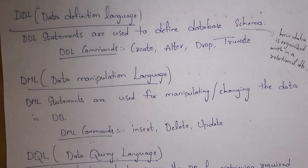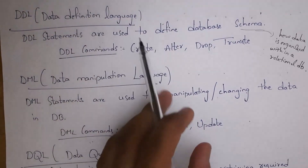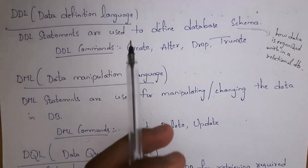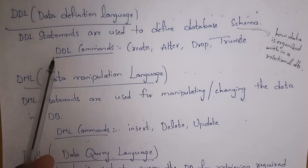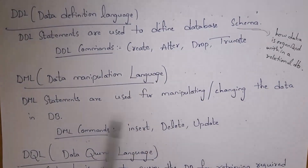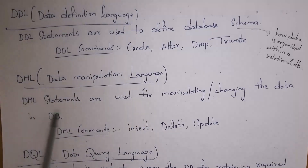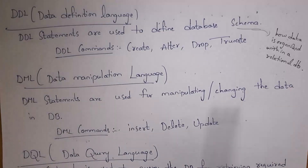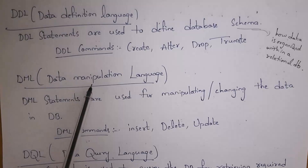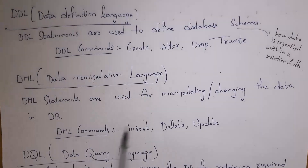DDL stands for Data Definition Language — DDL statements are used to define the database schema. Schema is how data is organized in a relational database. DDL commands are CREATE, ALTER, DROP, and TRUNCATE. DML stands for Data Manipulation Language — DML statements are used for manipulating or changing data in the database. DML commands are INSERT, DELETE, and UPDATE, which are used to modify data present in the database.